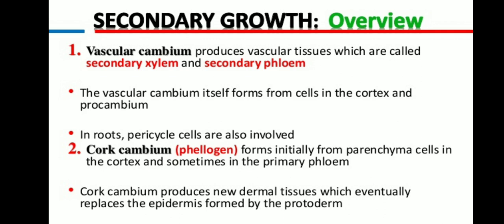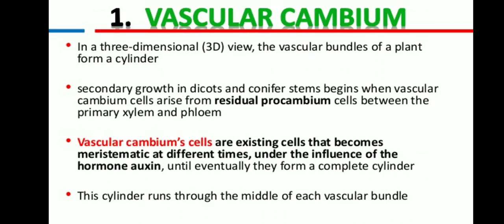The vascular cambium produces vascular tissue like secondary xylem and secondary phloem. The vascular cambium divides continuously to add secondary xylem and secondary phloem. The vascular cambium itself forms from cells in the cortex as well as in the procambium. In the roots, pericycle cells are also involved. The cork cambium, also called the phellogen layer, forms initially from parenchyma cells in the cortex and sometimes in the primary phloem.